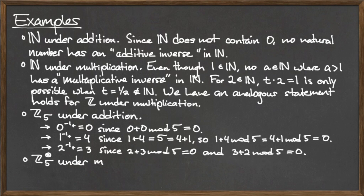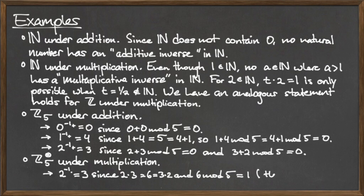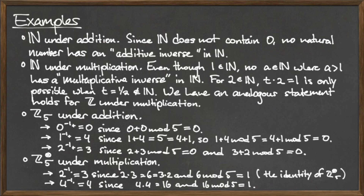Finally, let's consider the set Z mod 5 without 0 under the operation of multiplication. The element 1 is the multiplicative identity, and 1 is included in Z mod 5 without 0. In this set, the elements 1 and 4 are their own multiplicative inverses. That is, 1 is its own multiplicative inverse, and 4 is its own multiplicative inverse. Finally, the element 2 is the multiplicative inverse of 3, and vice versa.